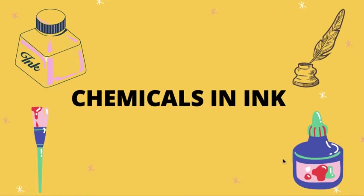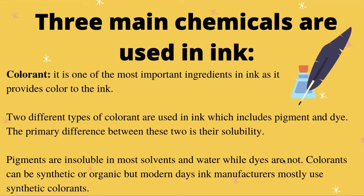Before discussing the different chemicals present in ink, it is worth noting that ink was used in ancient Egypt for writing and drawing on papyrus for at least the 26th century. Egyptian red and black ink included iron and ochre as pigments. So the history of ink can be traced back to both the Egyptian and Chinese periods.